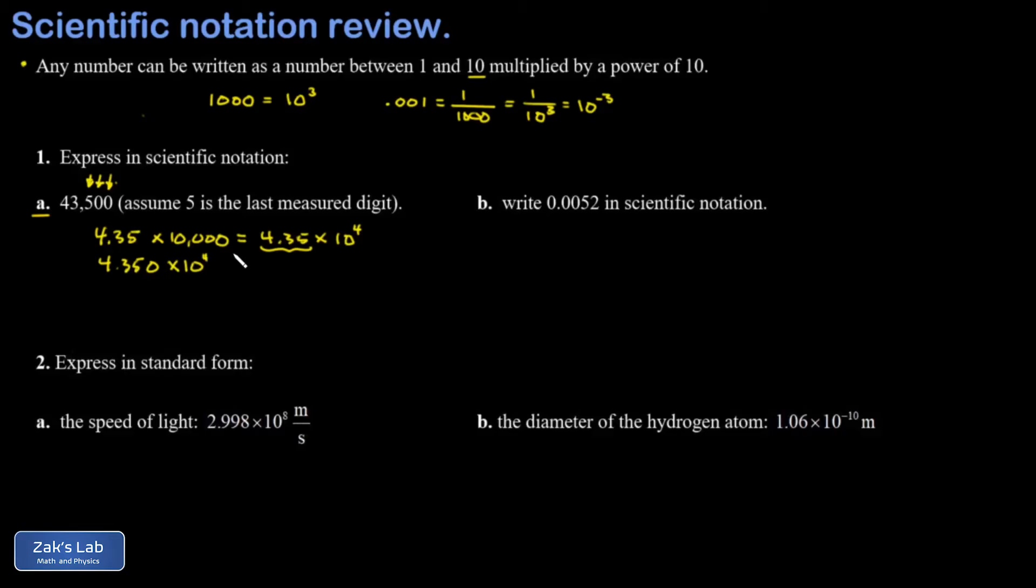This is a major advantage of scientific notation over standard notation. The trailing zeros in standard notation are ambiguous, but in scientific notation, however many digits you have in front of that power of 10, that's how many sig figs you have.